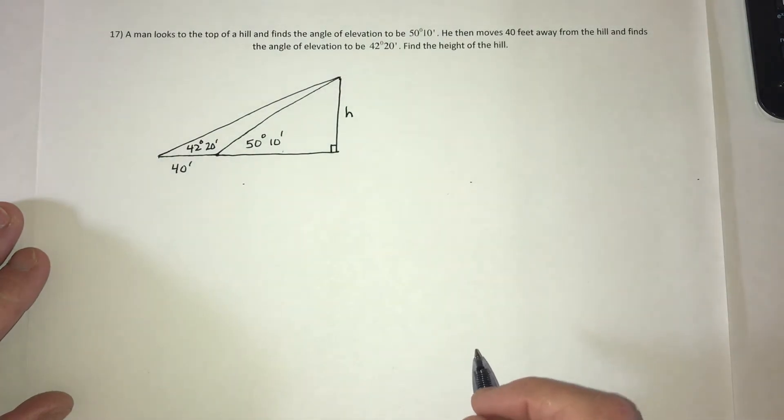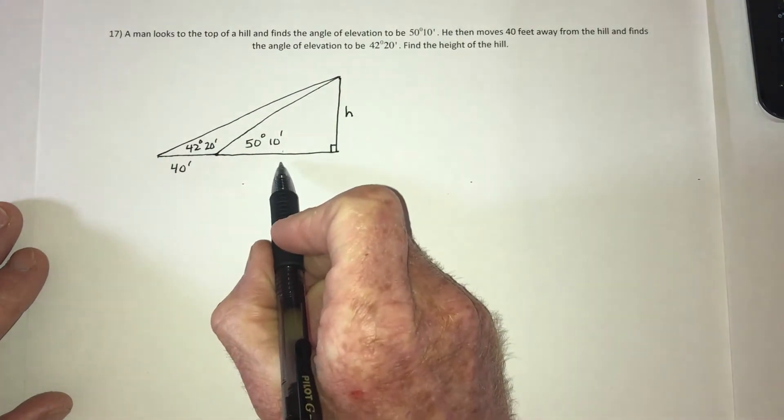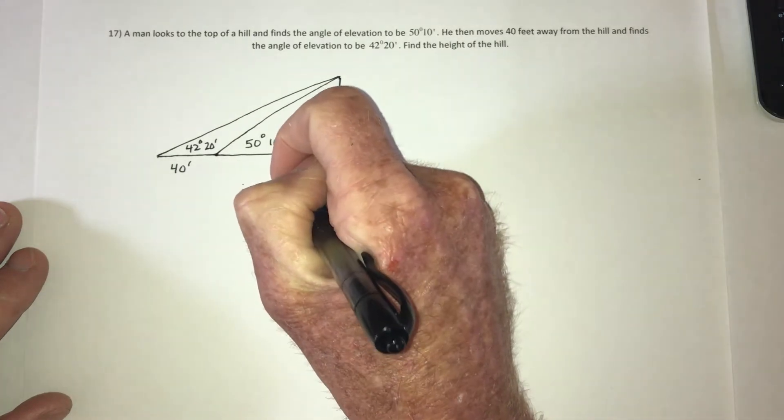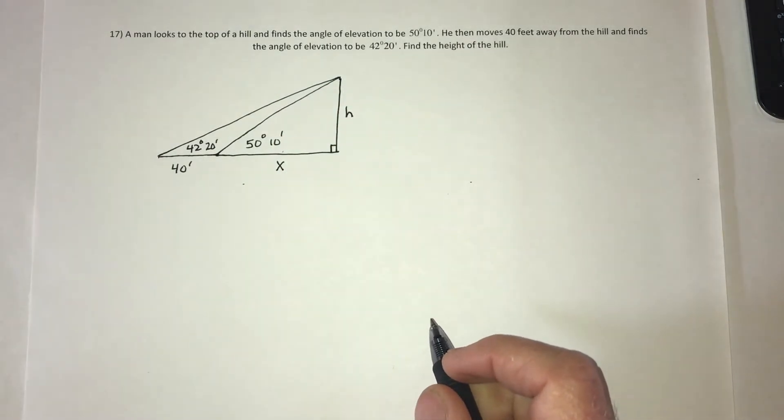Now the reason this problem is going to take a little bit longer is because this part right here is missing. So we'll need to use another variable like x. And when you have two variables, you need two equations.